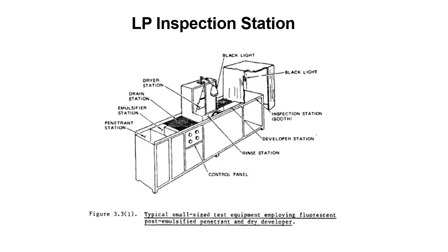Here's an LP inspection station. You'd set something like this up if you were going to be doing a lot of parts over and over in some kind of production situation. I worked in a foundry where they had something similar but much larger — they had black lights, a draining station, for doing parts the size of a Volkswagen. They didn't break out cans of dye penetrant and spray it on the part. They had stations set up, and this is one of many possible configurations for LP inspection stations — a cabinet situation with some sinks and a black light inspection booth where you can close it off.